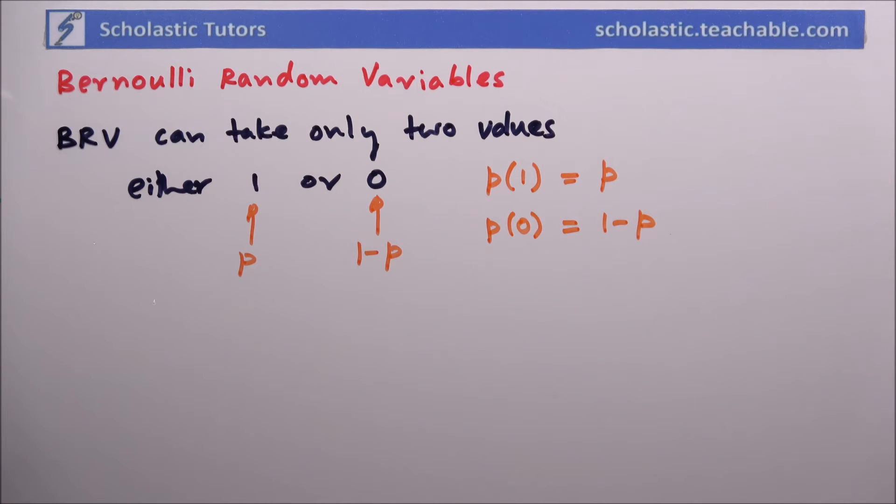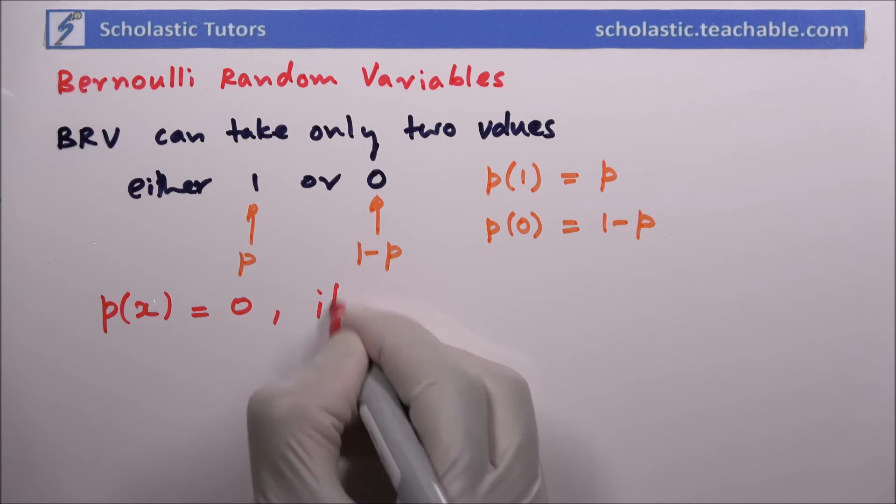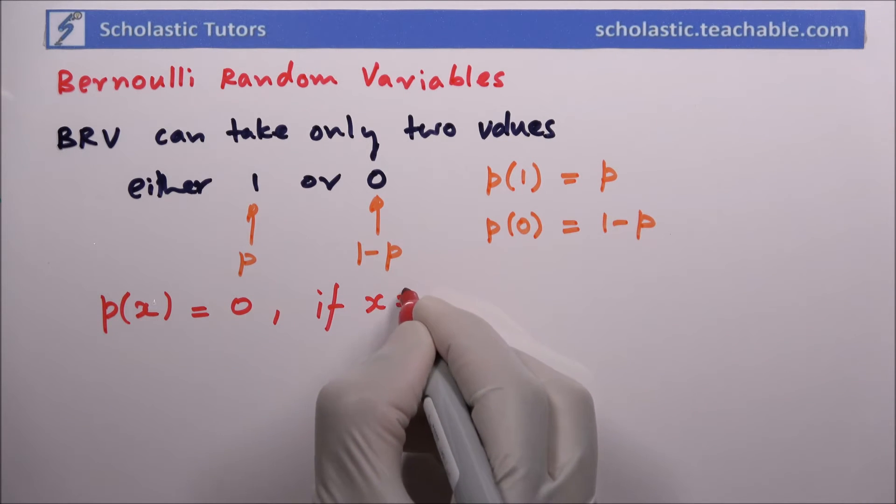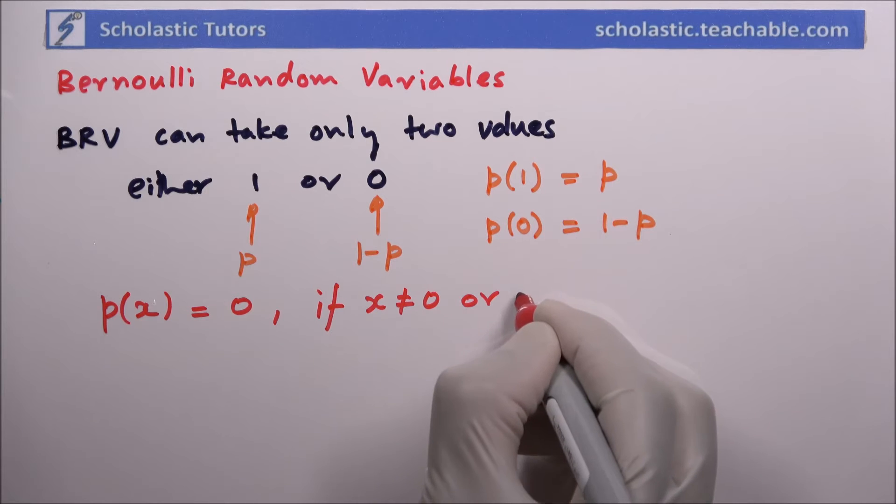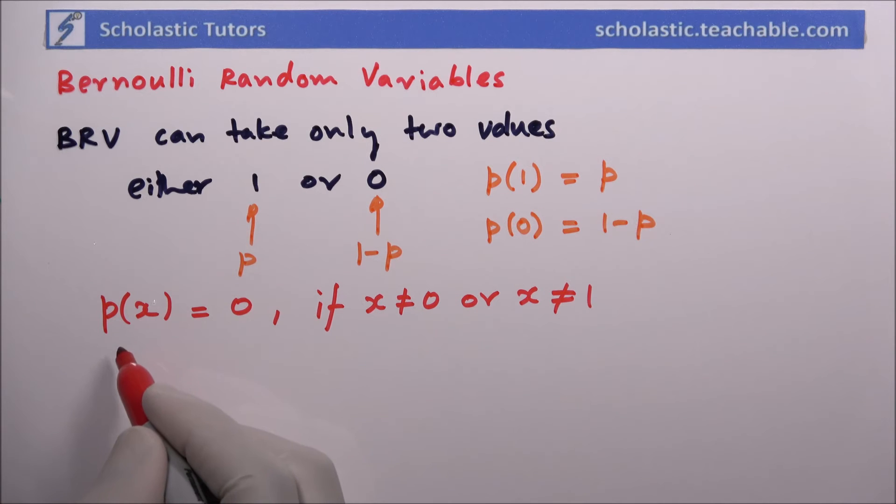There are only two values it can take: one or zero. The probability mass function p(x) will be equal to zero if x is not equal to zero or x is not equal to one.